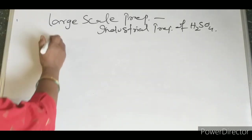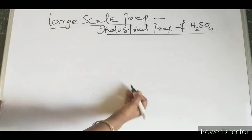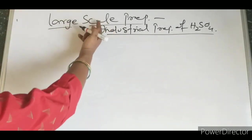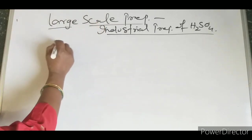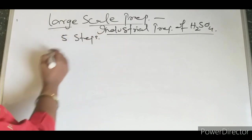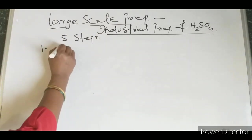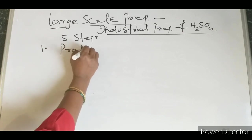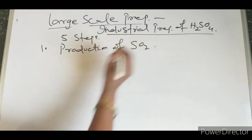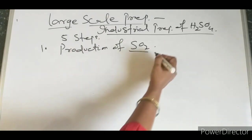What are the different stages for industrial preparation? This large-scale preparation can be done in 5 steps or 5 stages. The first stage is the production of SO2. SO2 can be produced by two ways.